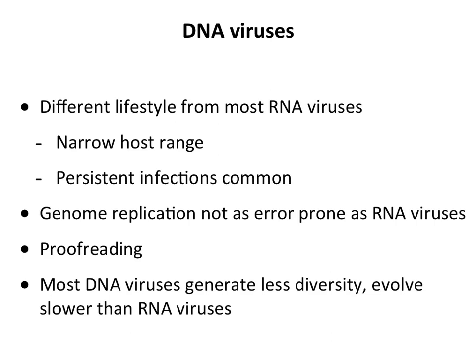DNA viruses have a very different lifestyle — they typically have a narrower host range, often make persistent infections, and their genome replication is not as error-prone. DNA viruses are able to proofread the errors they make, and as a consequence they have a lower mutation rate than RNA viruses. They exhibit less diversity and evolve more slowly than RNA viruses — this one property is important for the difference in evolution between RNA and DNA viruses.